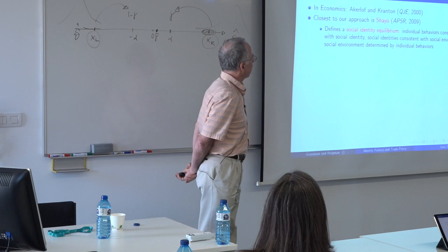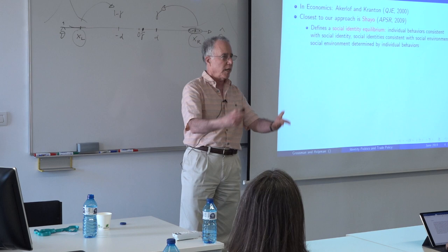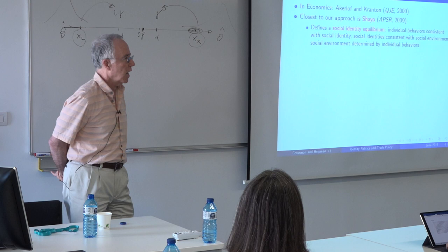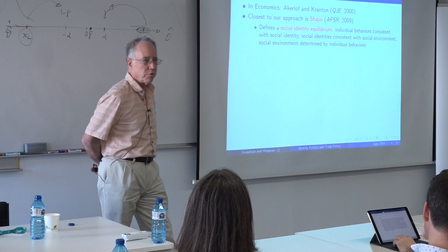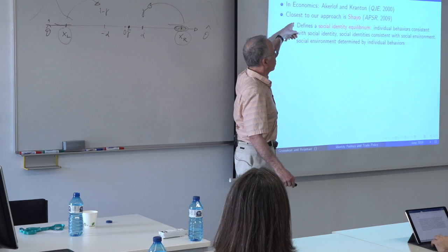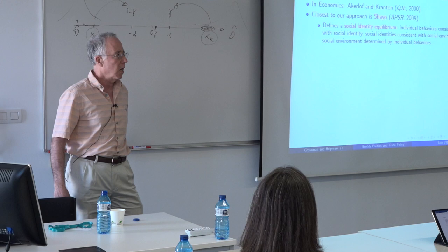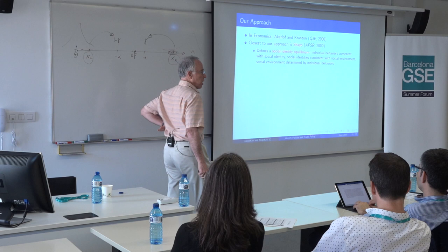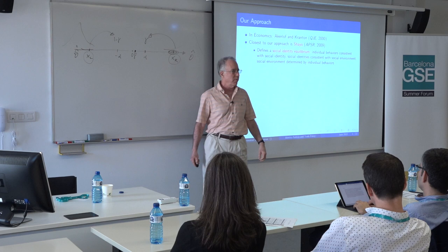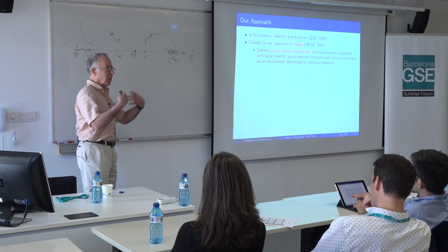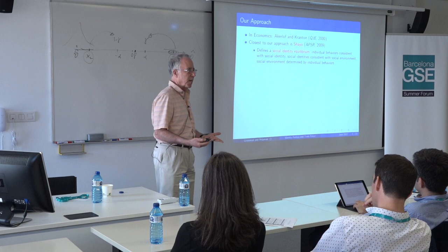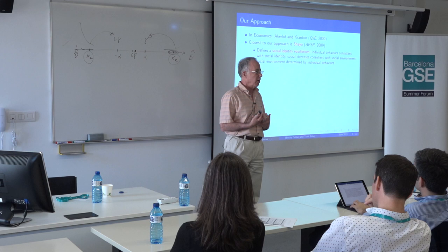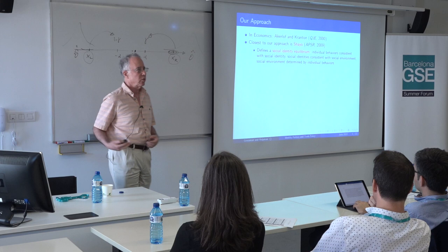In economics, Akerlof and Kranton have a well-known QJE paper introducing the idea of identity into economics and thinking about how social norms from identity might influence behavior choices. The paper closest to ours in approach is by Moses Shayo at Hebrew University, who introduces the concept of a social identity equilibrium in a full-fledged equilibrium model — exactly the way any economist would sit down and think about it. It adds the consistency we always want in an equilibrium model: the pattern of identification should be consistent with the environment and policies, and the policies consistent with the pattern of identification, so everything is self-fulfilling.